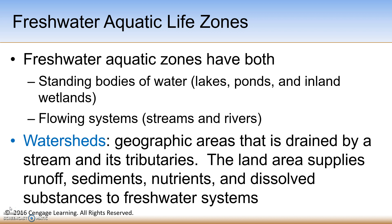We need to protect our lakes, rivers, and streams from pollution. A primary example of this is the Rhine River in Europe, which once supported more than 150 different species of fish. Today, only about 15 species of fish remain in this river because of pollution from factories, towns, and sewage treatment plants.